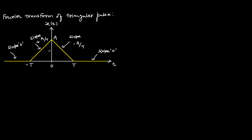This x(t) is a symmetrical signal or even function because it is symmetrical about the vertical axis. If we fold x(t), we get the same signal, so x(−t) = x(t), which confirms that x(t) is an even function.